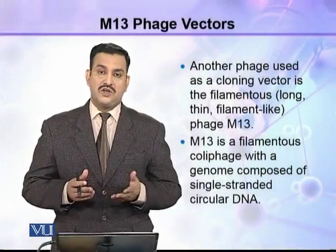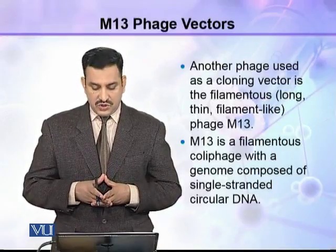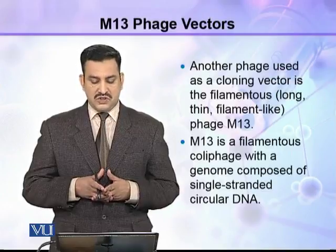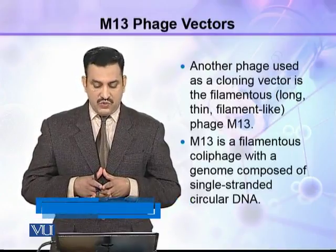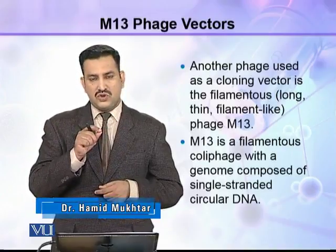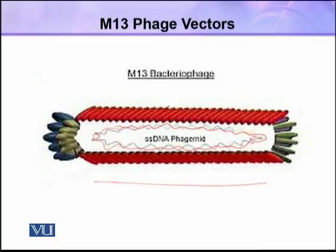M13 phage vector is another important vector which can be used in cloning. Another phage used as a cloning vector is the filamentous phage M13. Filamentous means long, thin, filament-like. M13 is a filamentous coliphage with a genome composed of single stranded circular DNA. Here you can see this is M13 bacteriophage and you can see this single stranded DNA fragment, which is a circular fragment.